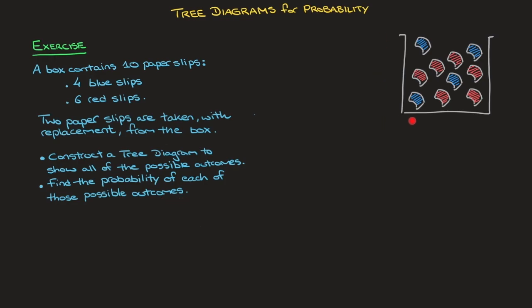As you can see on the right hand side here, I've illustrated this experiment — we have a box in which there are 10 paper slips, four of them are blue and six of them are red. To picture the experiment being described here, let me highlight a couple of very important words in this question: those are WITH REPLACEMENT.